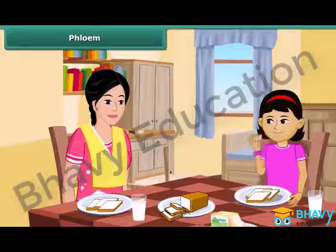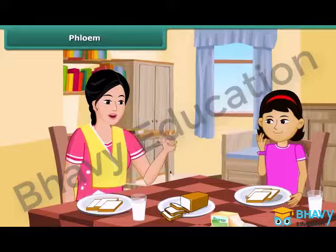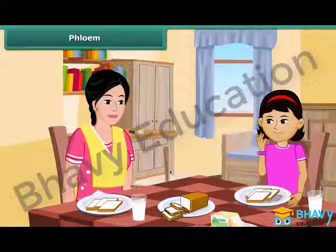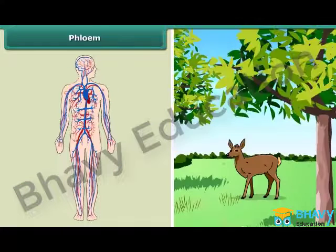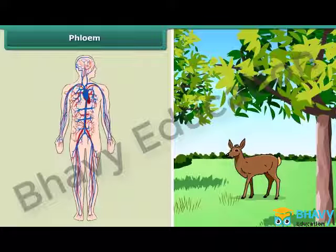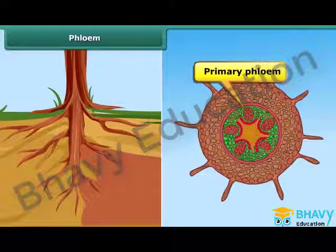Rhea is eating her breakfast in a hurry. Her mother advises her to chew the food properly so that the nutrients are absorbed by the body. Human beings and animals have a circulatory system that transports the nutrients absorbed from food to the different parts of the body. Plants have phloem to perform this task.